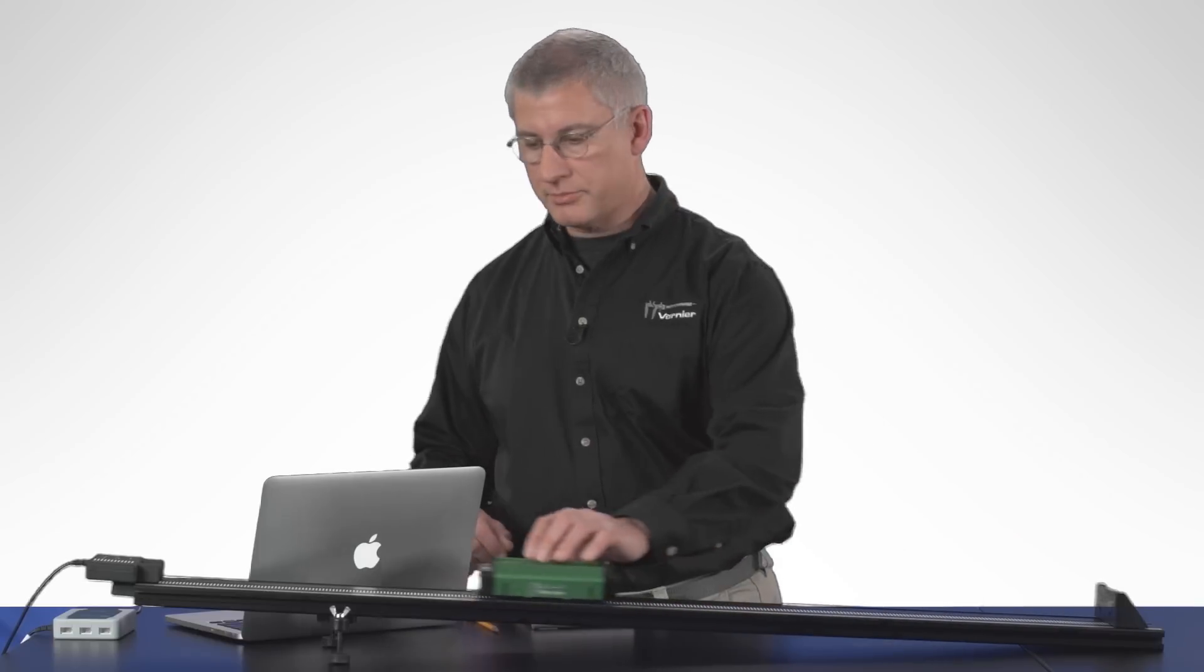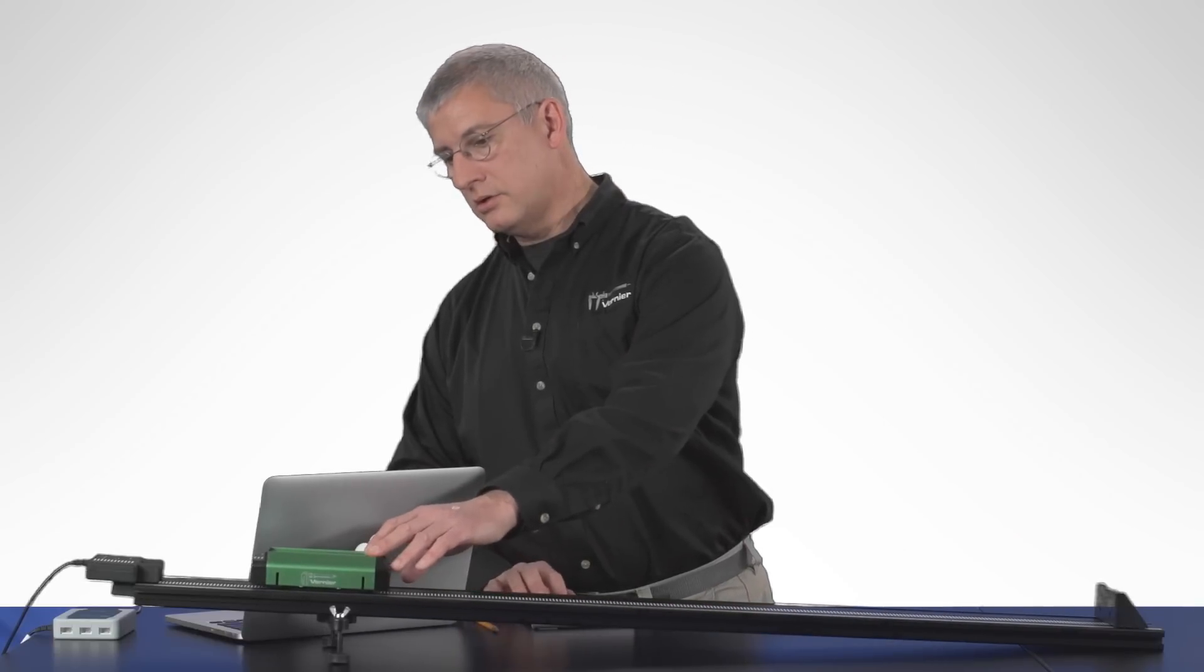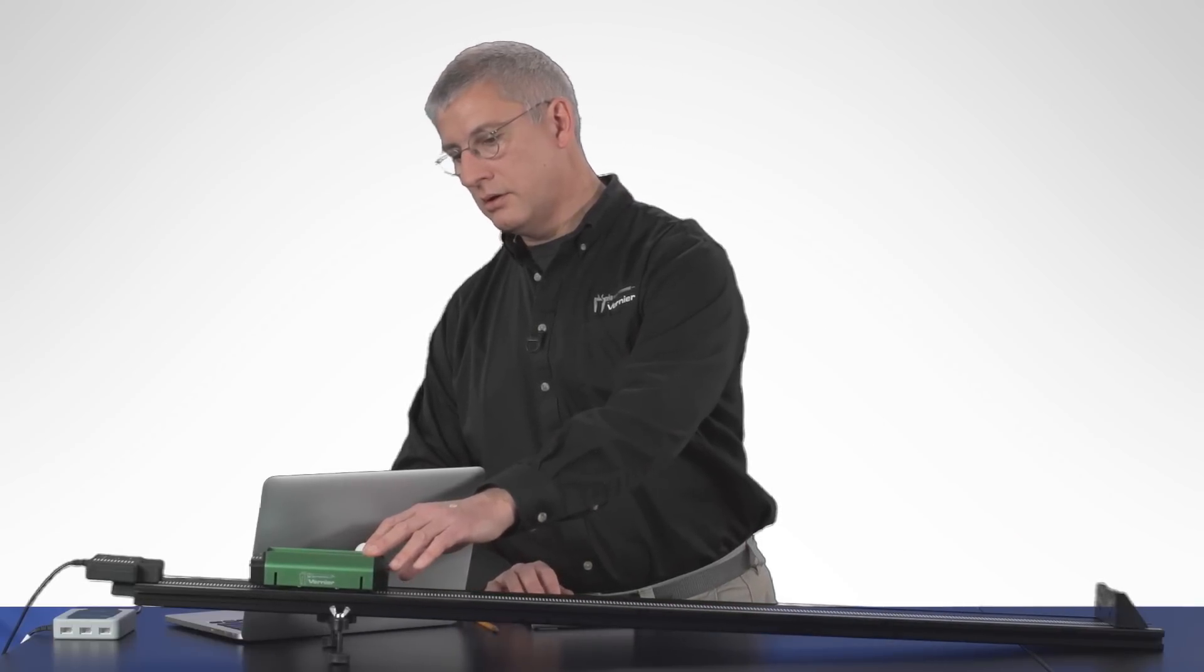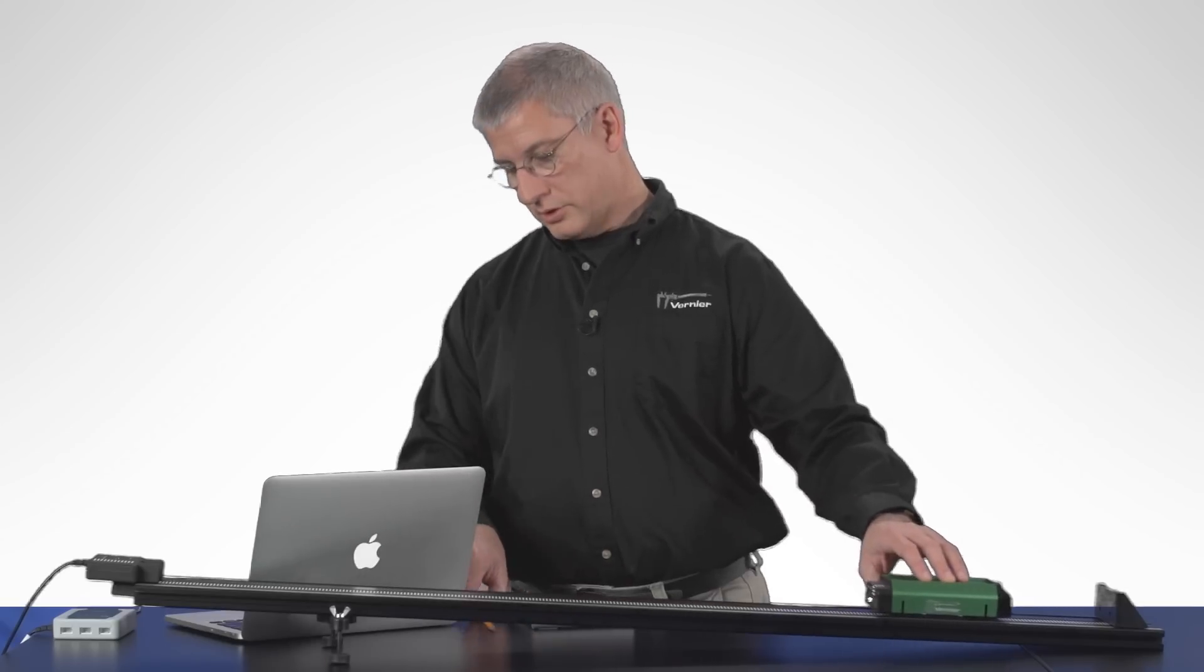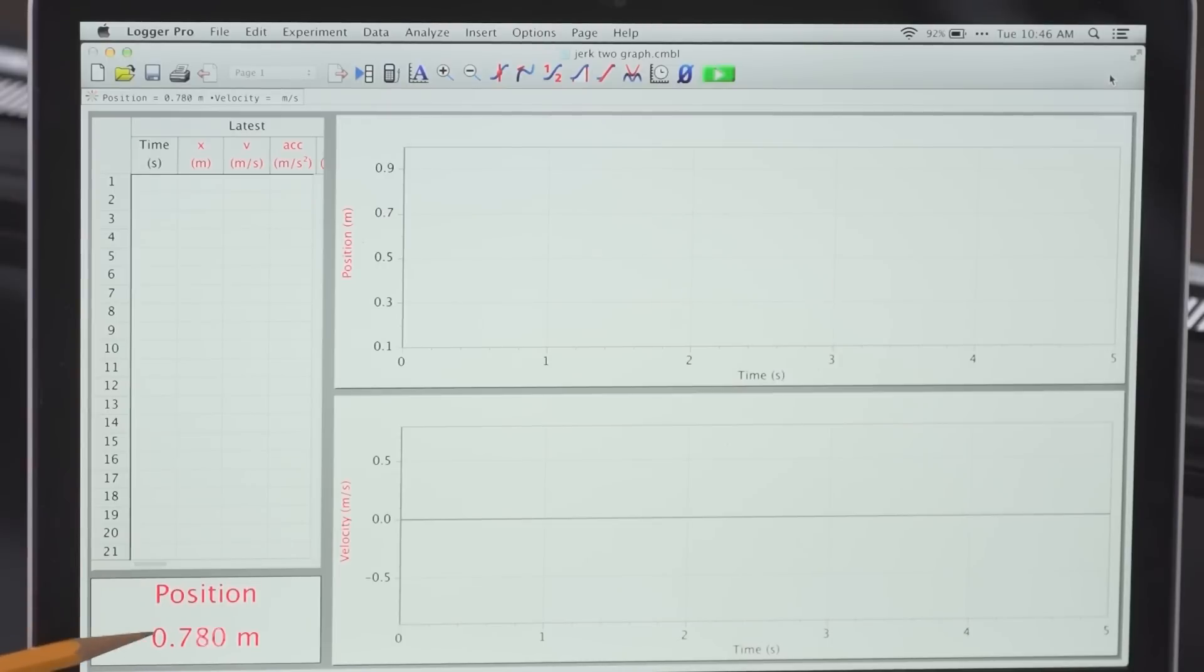I'm going to move the cart up to the top and launch the software. That's establishing my zero position. And if I let the cart roll down, you can see on my computer screen the current position is being shown in this digital readout.